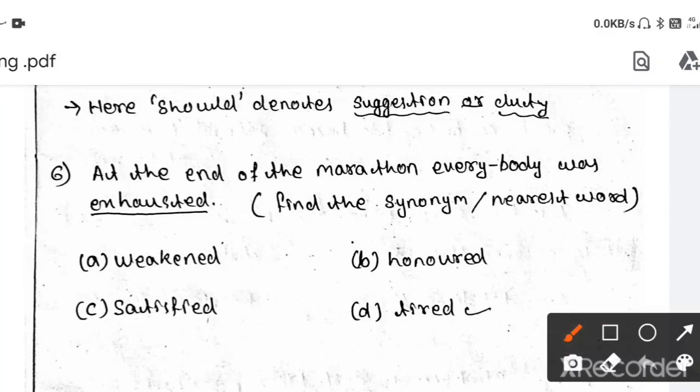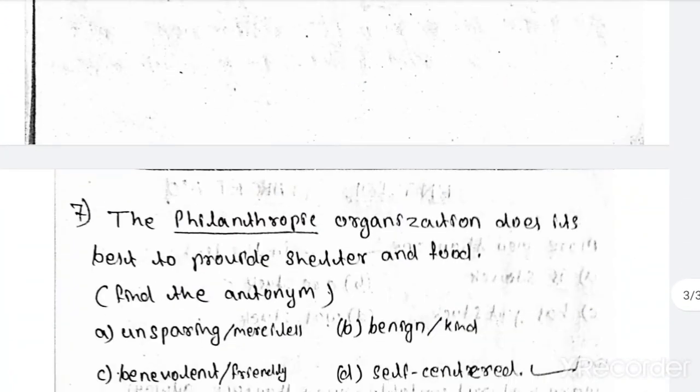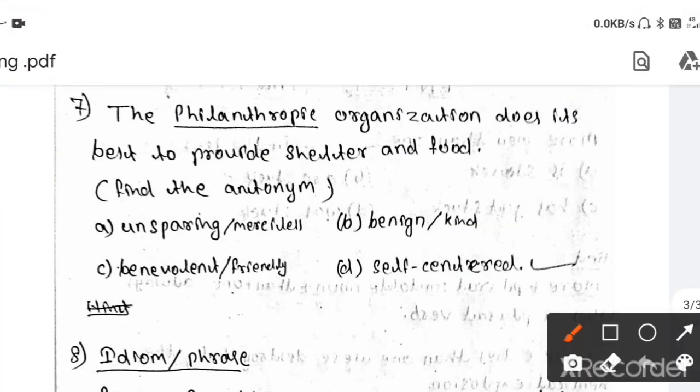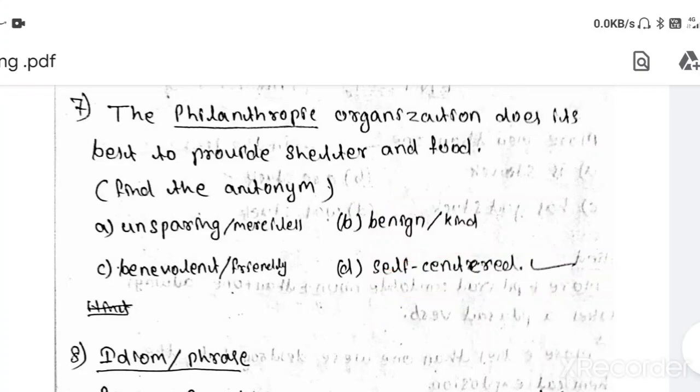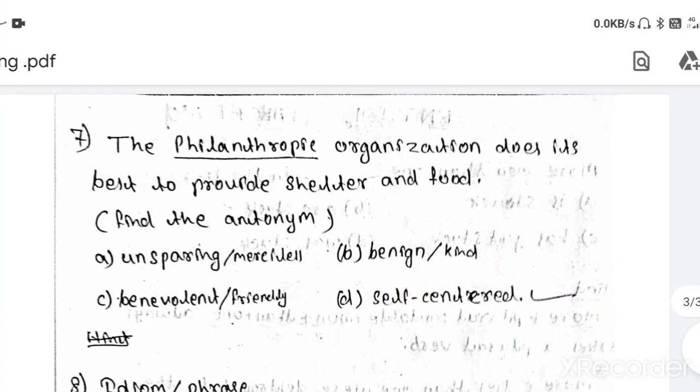Here find the nearest word or synonym. Exhausted. At the end of the marathon, everybody was exhausted. Here exhausted means tired. Then next question. Here is antonym question. The philanthropic organization does its best to provide shelter and food. Here antonym is your self-centered. Basically philanthropic means an organization or a body that helps people, but self-centered organization does not help people. So that's why your answer is self-centered.